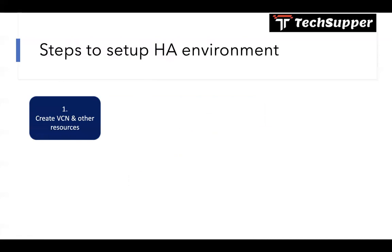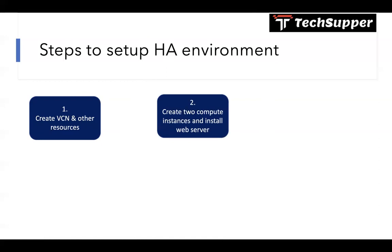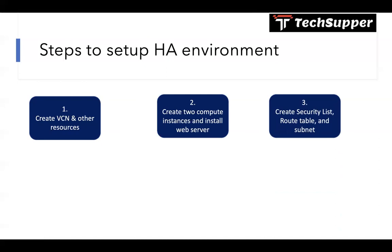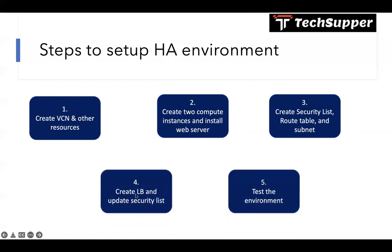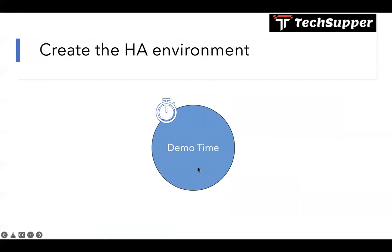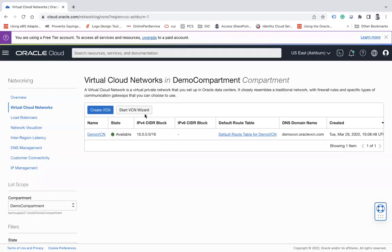Here are the steps to set up the actual environment. Step one: create a VCN and other resources - we've already done this in previous videos covering VCN, subnets, and related resources. Step two: create two compute instances and install the web server - we already have one instance with the web server installed and will create another. Step three: create additional security list, route table, and subnet for the load balancer. Step four: create a load balancer, update the security list, and test the environment.